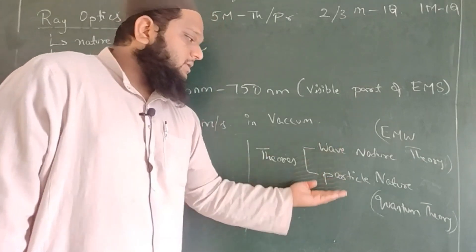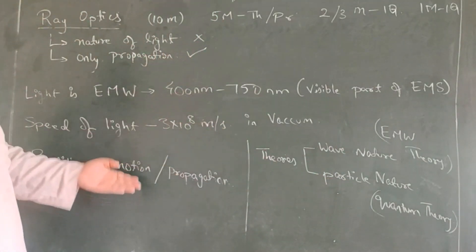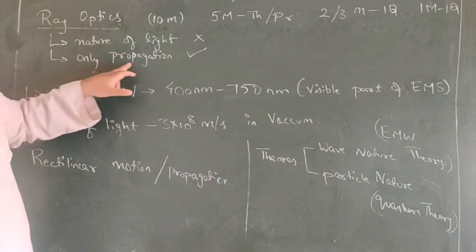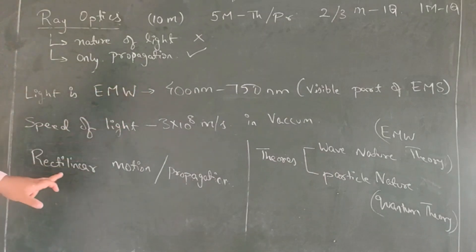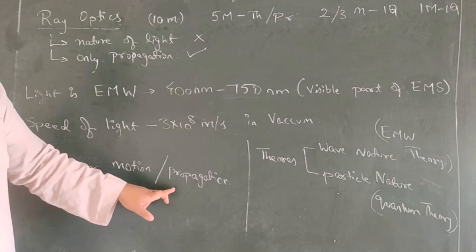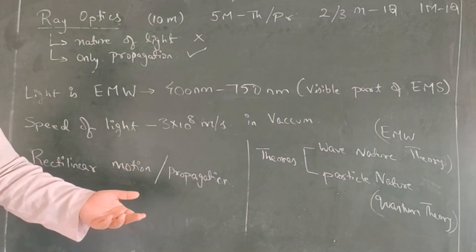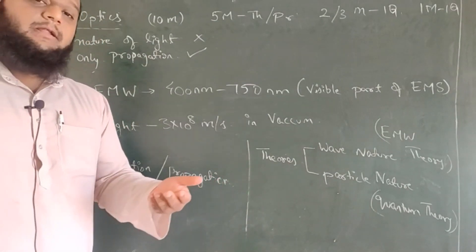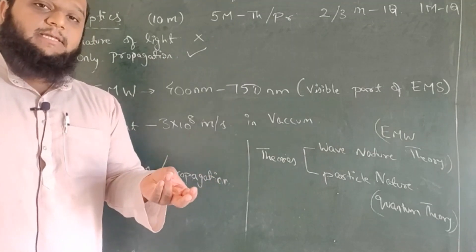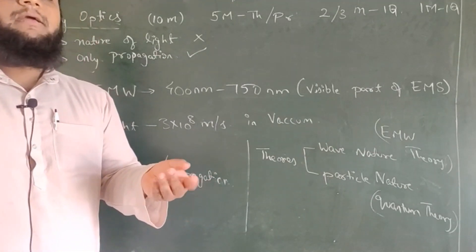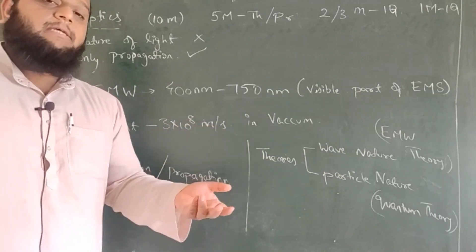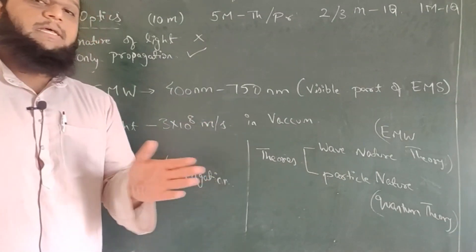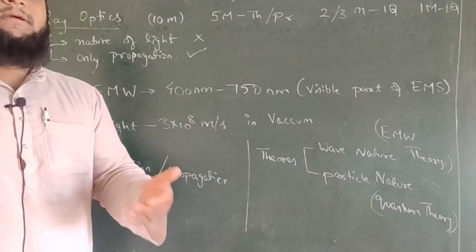This is the basic introduction to what you mean by light and what you are going to study in ray optics. Our focus in ray optics will be the propagation of light — basically following rectilinear motion or rectilinear propagation. In future classes, we will be learning about reflection, refraction, and different optical instruments like mirrors, refracting surfaces, and lenses. We will also have a brief on what you mean by a telescope — how light forms an image, where you place the object, and how the image is formed.